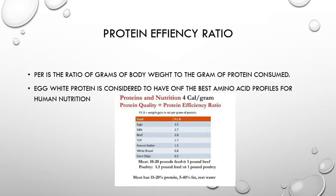Protein efficiency ratio (PER) is the ratio of grams of body weight gained to grams of protein consumed. Egg white protein is considered to have one of the best amino acid profiles for human nutrition. PER values: egg 3.5, milk 2.7, beef 2.6, peanut butter 1.5, white bread 0.8, corn chips 0.5.